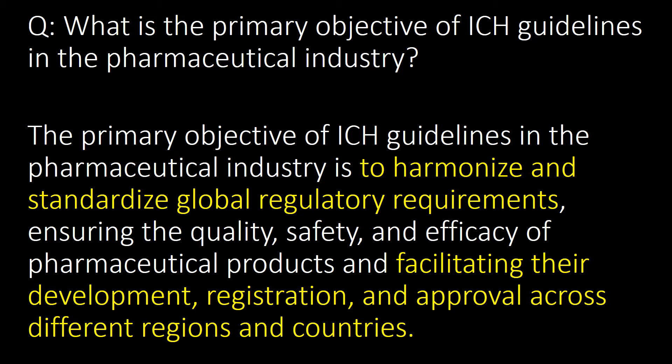The primary objective of the ICH guidelines in the pharmaceutical industry is to harmonize and standardize global regulatory requirements, ensuring the quality, safety, and efficacy of pharmaceutical products and facilitating their development, registration, and approval across different regions and countries.